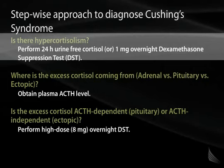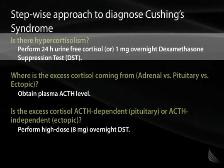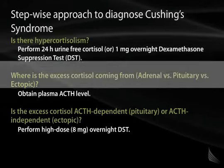If collecting a 24-hour urine cortisol is not feasible, a screening test can be performed using a 1 mg overnight dexamethasone suppression test. Dexamethasone is a synthetic steroid not made in our bodies. The normal response to 1 mg of dexamethasone is complete suppression of plasma cortisol — if that happens, the patient does not have hypercortisolism. If plasma cortisol does not suppress, the patient has hypercortisolism or Cushing syndrome.